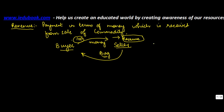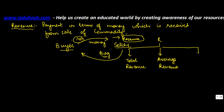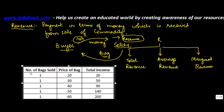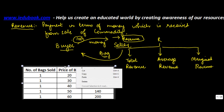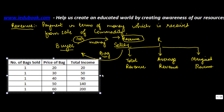Revenue can be expressed in three forms: this could be total revenue, this could be average revenue, and this is marginal revenue. Now, what do you mean by each of these terms? For this I will just add a table here — I give you the example of a bag, so this table basically refers to the various bags which were sold.